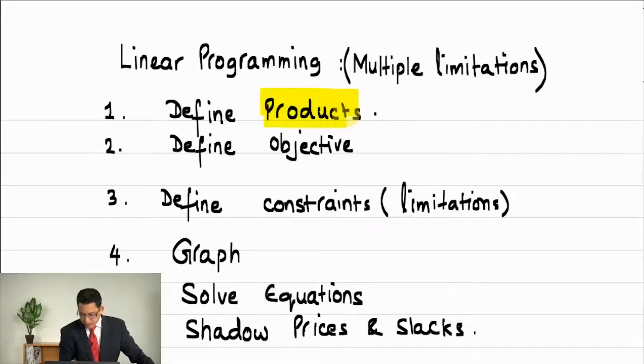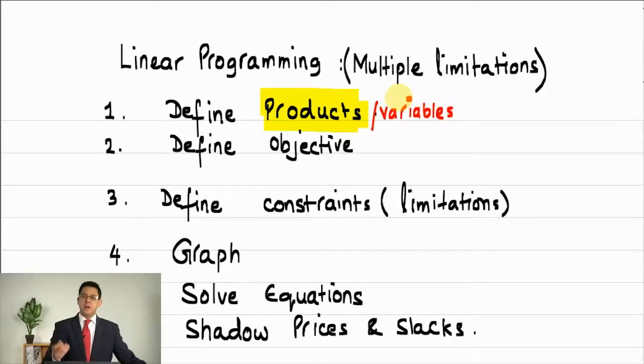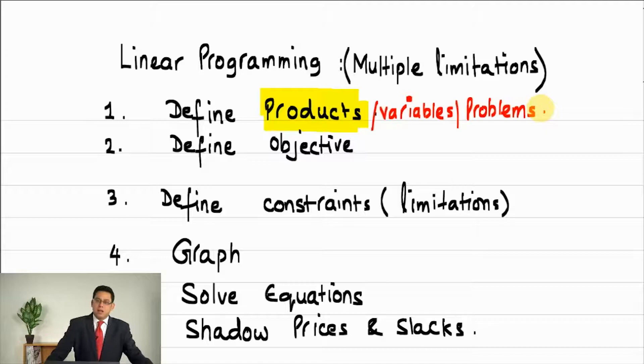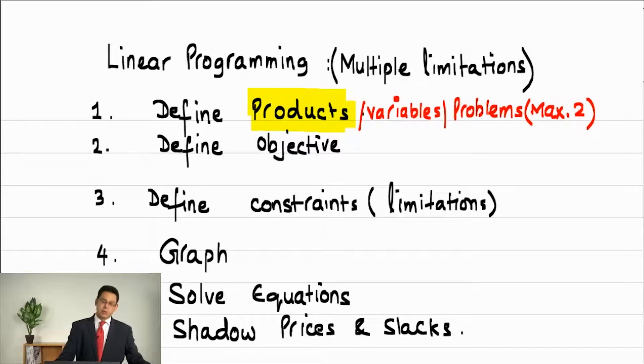First of all we need to understand about the products. Define products in different books, in different notes, in different materials. You may see other expressions as well. Step number one as define variables, define unknowns or define problems. It is better for me to remember in the exams that these variables are actually products. These unknowns are actually products and as far as this syllabus is concerned or linear programming is concerned there is a maximum of two products.